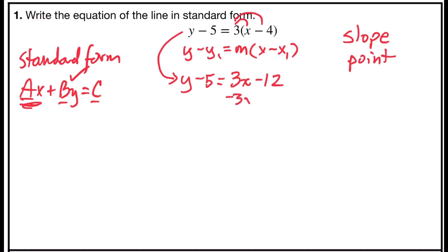So I'm going to subtract 3x from both sides. So that gives me negative 3x plus y minus 5 on the left side. 3x minus 3x is 0, or as some people say it cancels out. And 0 minus 12 is negative 12.